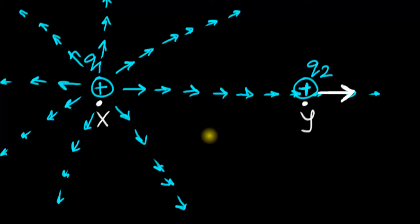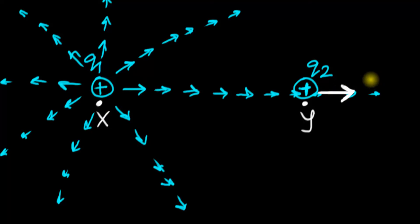Now here's a very human question: how do you know this is true? This sounds fantastic — like science fiction — that a charge tells space what to do and space is the one acting on other charges. Is this real physics? Is there a way to confirm that this mechanism is indeed true? We can only ever calculate the force — so how do we know this mechanism is what's actually happening?